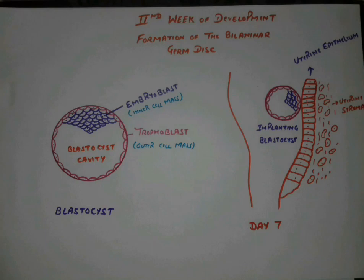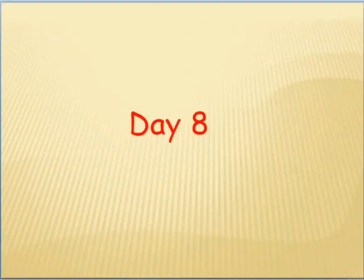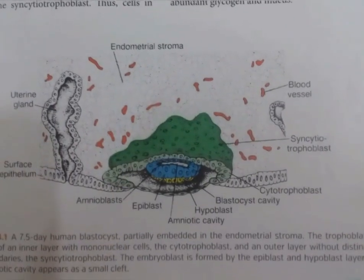In the second diagram, on day 7 during implantation, when the blastocyst comes in contact with the uterine epithelium, inside there is the presence of the uterine stroma. The blastocyst at that time is called the implanting blastocyst, and the epithelium into which the blastocyst gets implanted is called the uterine epithelium.